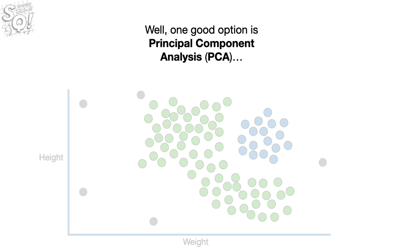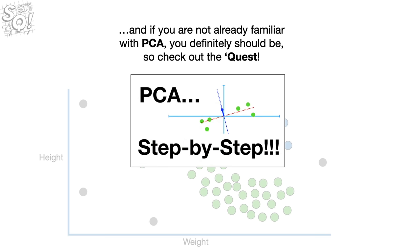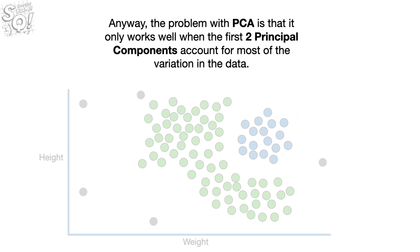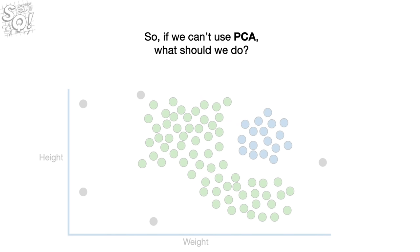One good option for high-dimensional data is Principal Component Analysis, PCA. However, the problem with PCA is that it only works well when the first two principal components account for most of the variation in the data. Simply put, if you have a really complicated dataset, PCA may not work very well. So if we can't use PCA, what should we do?